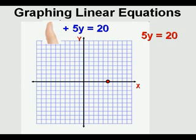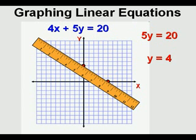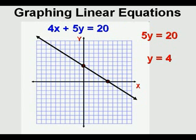Now we find the y-intercept by covering up the x-term, which gives us 5y equals 20. We solve for the y-intercept by dividing both sides by 5: 20 divided by 5 equals 4. We graph the point along the y-axis at y equals 4. Now we're ready to graph the equation by drawing a line through the two points, lining up a ruler to draw an accurate straight line. This is the line for the equation 4x plus 5y equals 20.